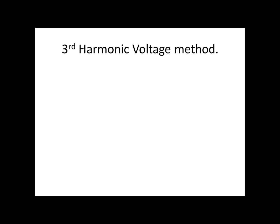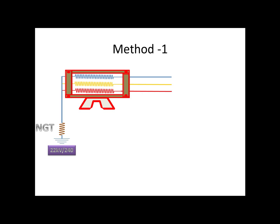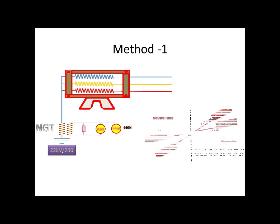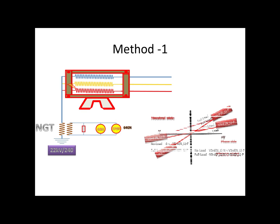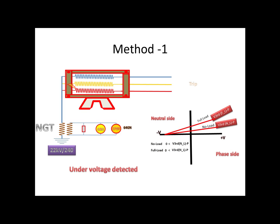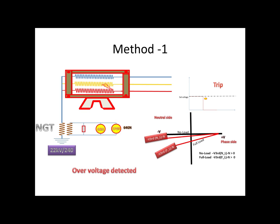Now we will see the third harmonic voltage method. Under this, we have three methods. Method 1: For the neutral side NGT, the VT is connected to the relay. The relay will receive only third harmonic voltage, and the relay gets input only from the neutral side VT. If we see the graph on no load, it has some voltage, so the relay setting should be lesser than the no load voltage value. If the fault occurs on the neutral side, then the third harmonic voltage will get reduced. In this case, we need an under-voltage setting. If the set voltage is lesser than the measured voltage, then the protection will give a trip. On the other side, if the fault is on the phasor side, then the third harmonic voltage will be very high, so it will not give a trip command.